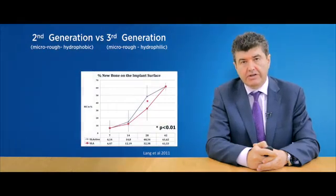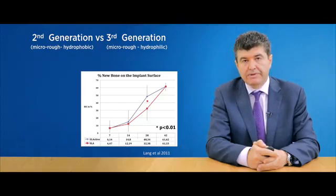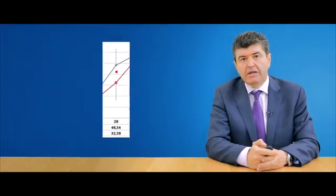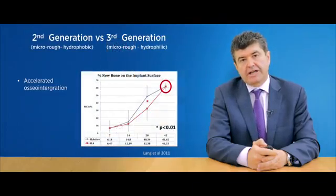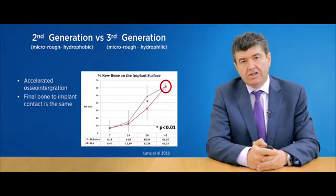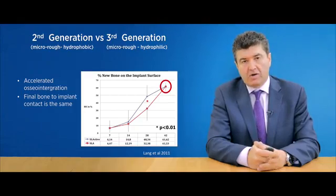Now let us consider second generation micro rough implants which are hydrophobic compared to third generation implants which are both micro rough and hydrophilic. In this particular study, which is carried out in humans, we can see that at the four week mark, there is significant difference in bone-to-implant contact between the two implant surfaces. However, this difference does not persist at the six week mark. This is also consistent with other animal studies which show that third generation implants, such as the hydrophilic implants, accelerate bone transformation but ultimately result in the same amount of osseointegration as the second generation micro rough implants.